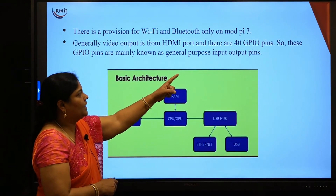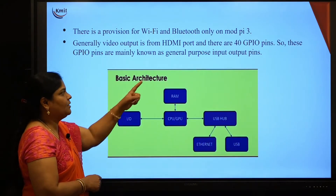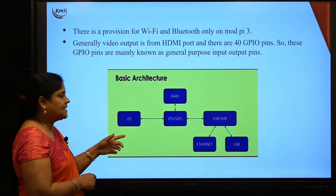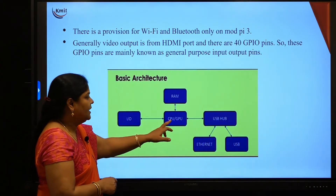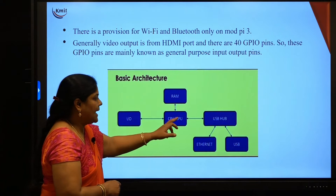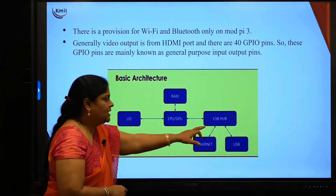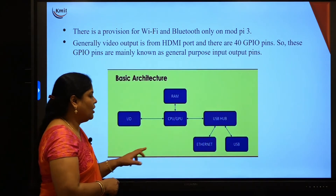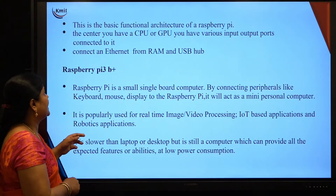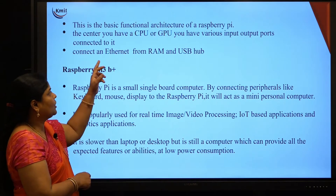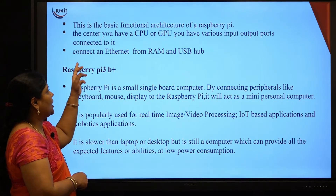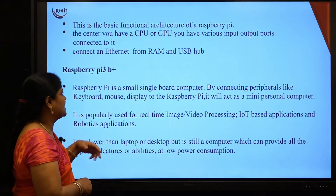The GPIO pins are known as General Purpose Input Output pins. The basic architecture of Raspberry Pi has the CPU or GPU at the center, connected to input/output, RAM, and a USB hub. The USB hub can be connected using a USB port or an Ethernet port. This is the basic functional architecture of Raspberry Pi.